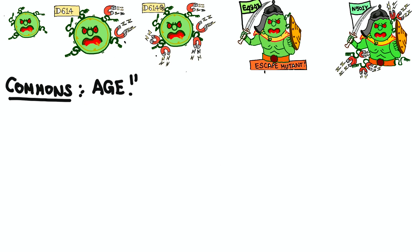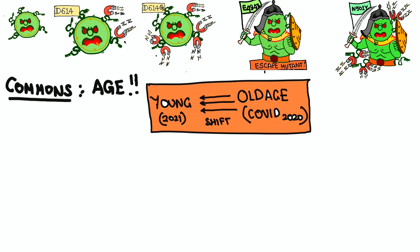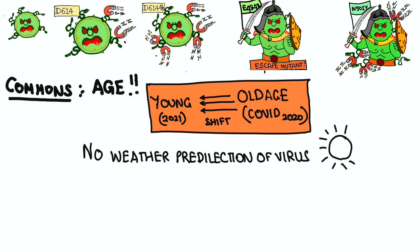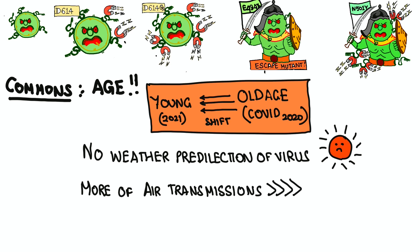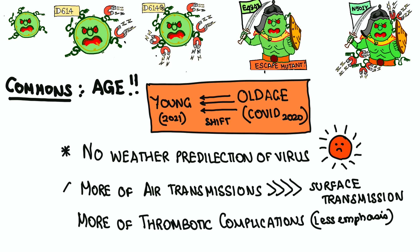Some common features across all variants: The age pattern is slowly shifting more towards young people. Initially it was thought COVID would occur mainly in winter seasons, but weather predominance is not seen now. More airborne transmission is seen than surface transmission, with less emphasis on surface transmissions. More thrombotic complications are also being observed.